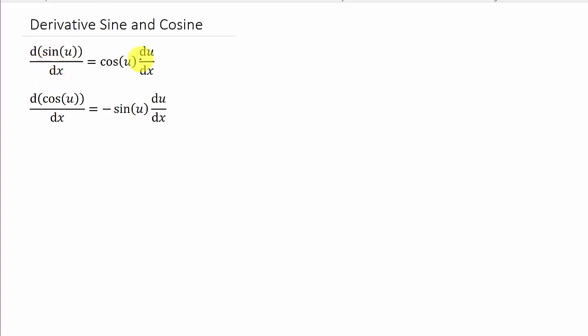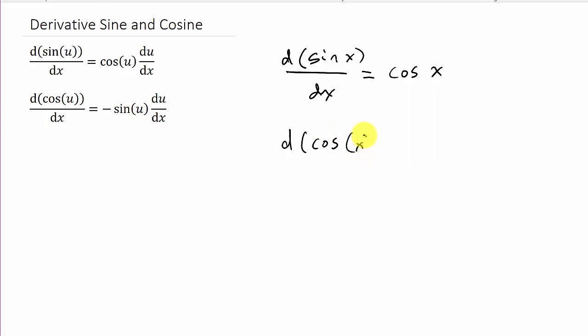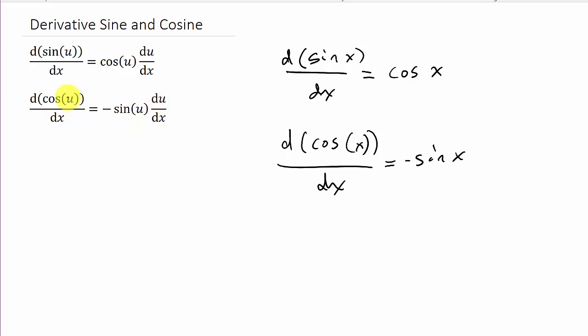You've got to know the derivative of sine and cosine. The way I have it written here, the derivative of just sine x with respect to x is cosine x. And the derivative of cosine x with respect to x is negative sine x.